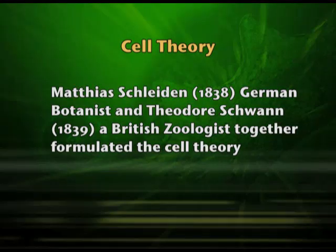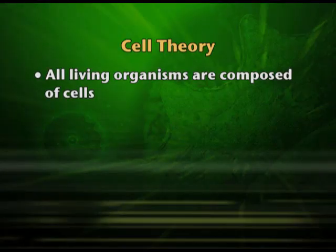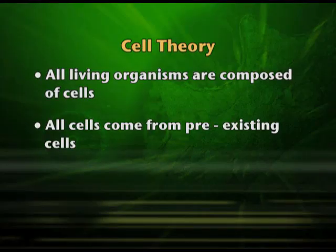Around 1838, Schleiden and 1839, Schwann — these two scientists gave us cell theory. They told us what cell theory is, and of course it is correct. They said that all living organisms are composed of cells. This is how cell theory goes: all living bodies, whether animal or plant, are composed of cells, or cells are the building blocks. The second point: all cells can come only from pre-existing cells.